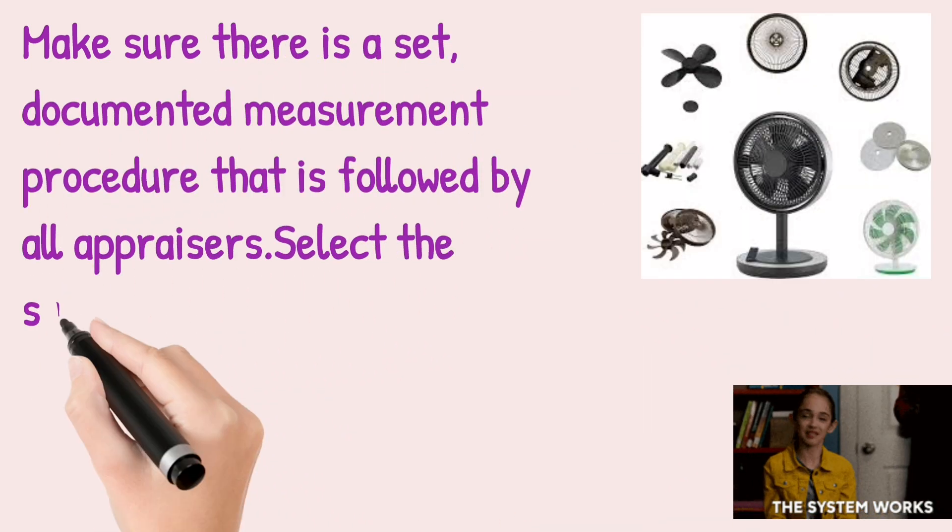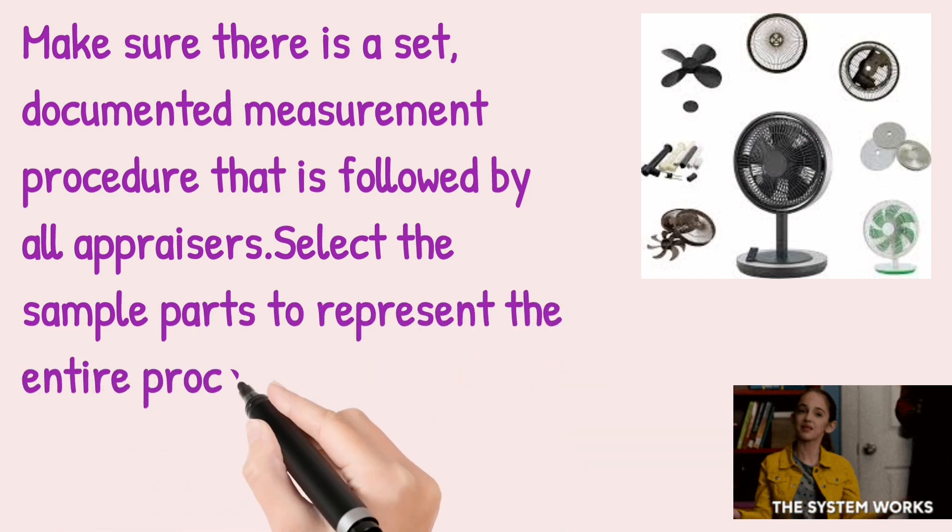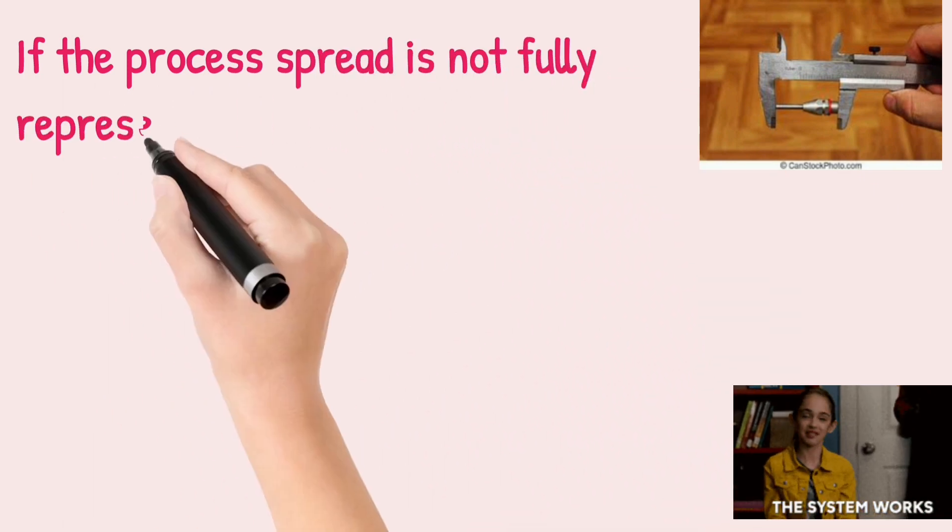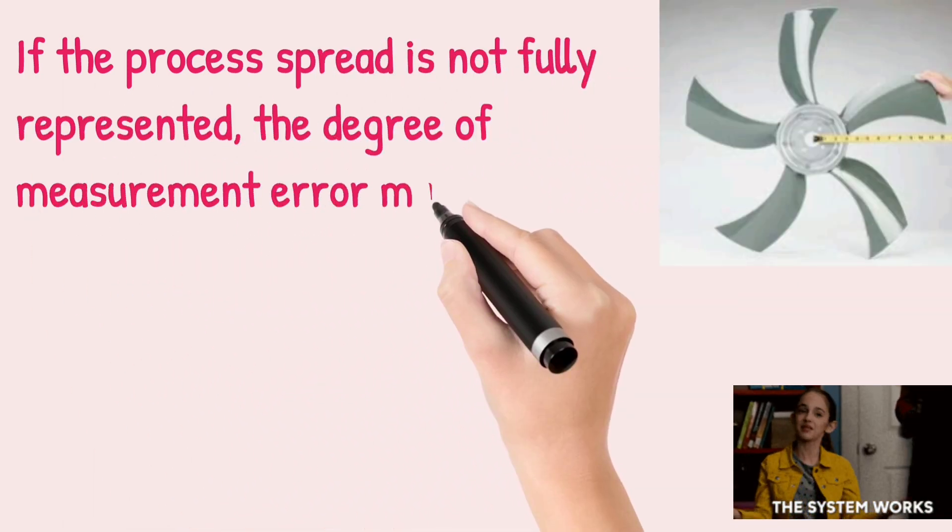Select the sample parts to represent the entire process spread. This is a critical point. If the process spread is not fully represented, the degree of measurement error may be overstated.